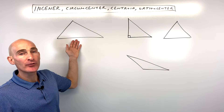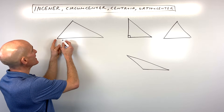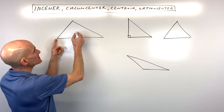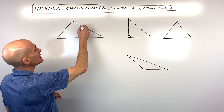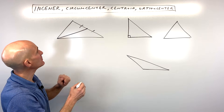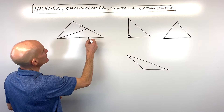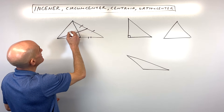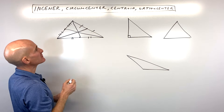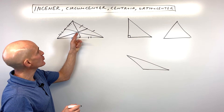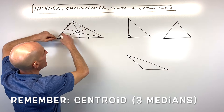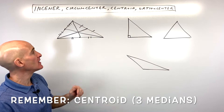For the centroid, what we're looking at are the three medians. Where do the three medians cross? That's the point of concurrency, and we call that point where they cross the centroid. What you do with the centroid is you go from the vertex to the middle of the opposite side — think of median as middle, so the two halves of that side are congruent. We go from the opposite vertex to the opposite side — that's one median. We find the midpoint on this side and draw that median, and same thing for the third side. Where those three cross is our centroid, and it's like the center of mass — if you cut this triangle out, you could balance it right at this point.